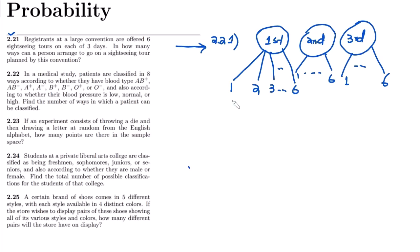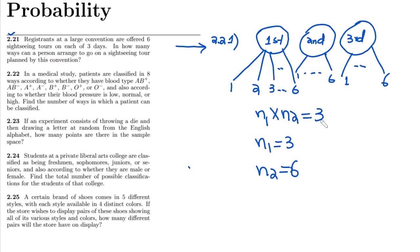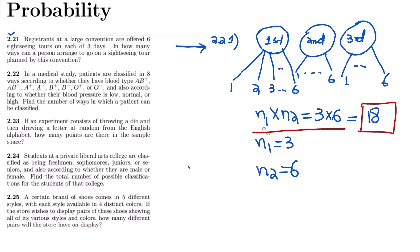We have three days and each day has six options. So n1 is the number of days, which is three, and n2 is the number of options each day has, which is six. Therefore n1 multiplied by n2 is 3 multiplied by 6, which equals 18. So the answer to question 2.21 is 18.